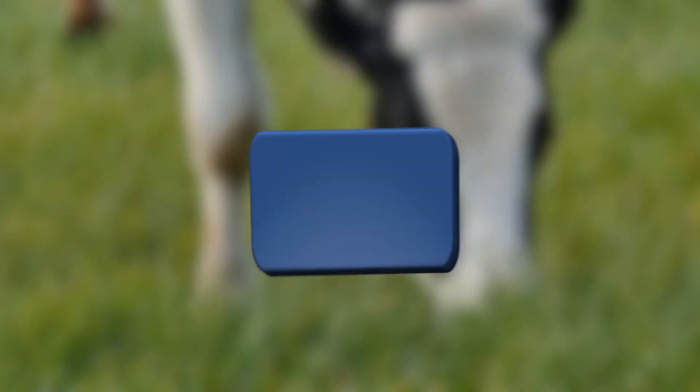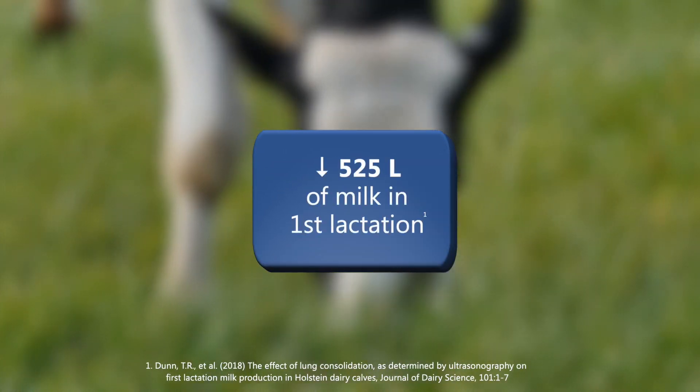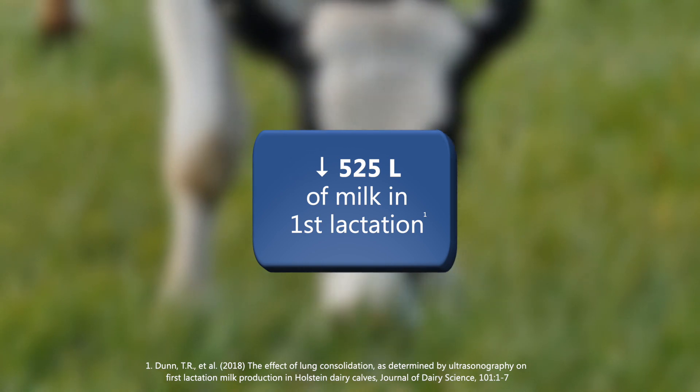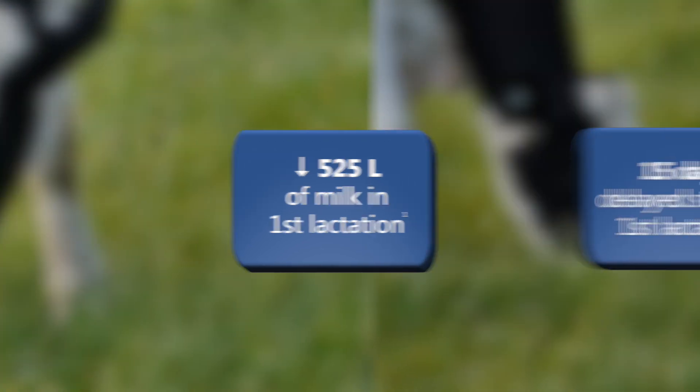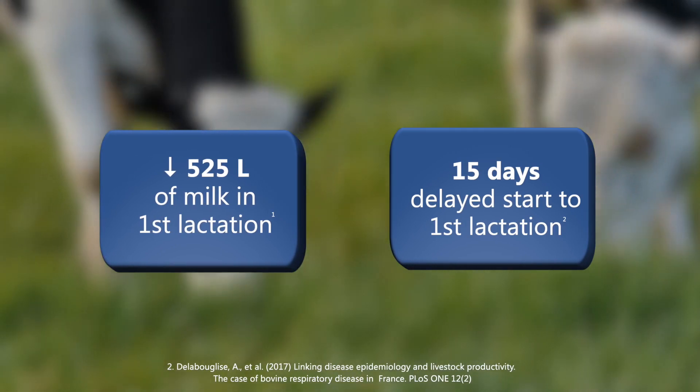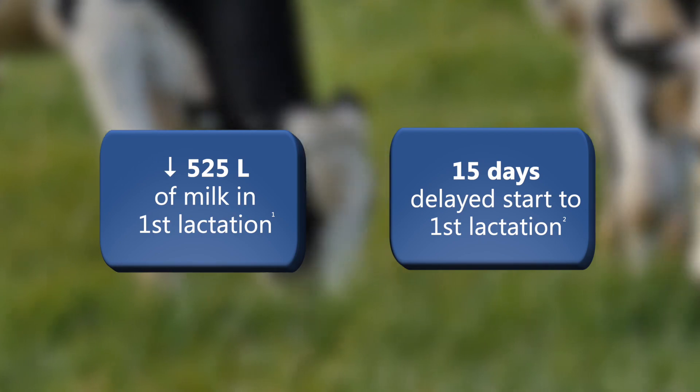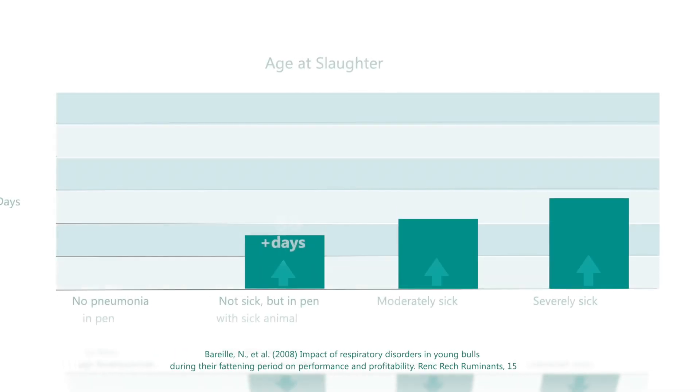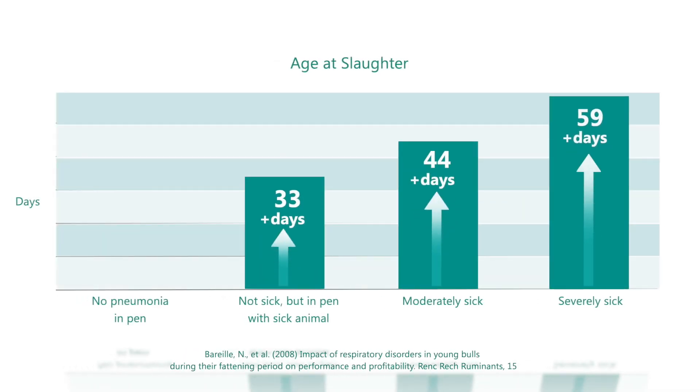What is the impact of bovine respiratory disease on productivity? There are long-term repercussions on productivity. For example, if a dairy heifer calf experienced bovine respiratory disease in the first eight weeks of life, they can have a reduced milk yield of 525 litres in their first lactation and a delay in their first calving by 15 days. From a beef point of view, animals with overt clinical signs — such as coughing, fevers, and increased respiration rate — can take 59 days longer to finish, and those that are subclinical with no overt signs can take 33 days longer to finish.